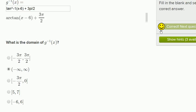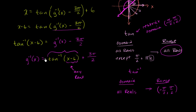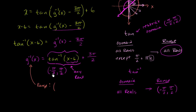Just for fun, let's think about the range of g inverse. The arctangent part outputs values between negative π/2 and π/2. Then we add 3π/2 to everything: the low end gives 3π/2 minus π/2 equals 2π/2, which is just π; the high end gives 3π/2 plus π/2 equals 4π/2, which is 2π. So the range of g inverse of x is the open interval from π to 2π — it doesn't include the boundaries. But its domain is all real numbers.